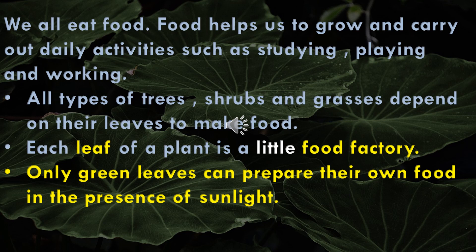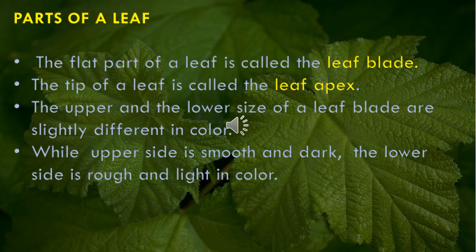We all eat food. Food helps us to grow and carry out daily activities such as studying, playing, and hockey. All types of trees, shrubs, and grasses depend on their leaves to make food. Each leaf of a plant is a little food factory. Only green leaves can prepare their own food in the presence of sunlight.